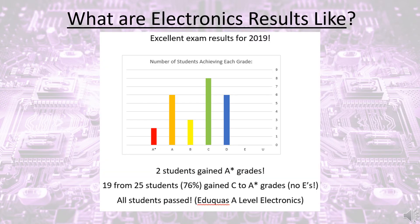What are electronics results like? 2019 was the first year of results for this reformed syllabus. All students passed at grades D or above. 19 from 25 students gained C to A* grades. Two students got A* grades. We anticipate similar or better results for 2020.